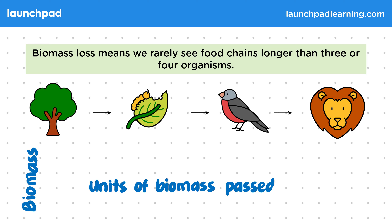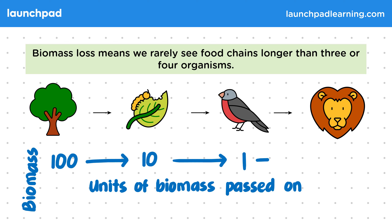If we start with 100 units of biomass, by the third organism we're already down to 1 unit. You don't need to know these numbers for the exam — just know that biomass is lost going up trophic levels.